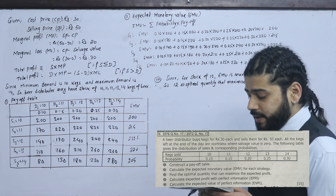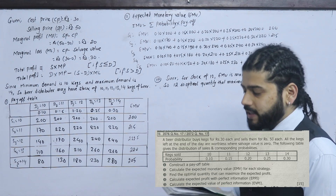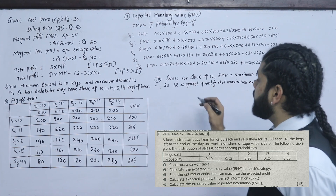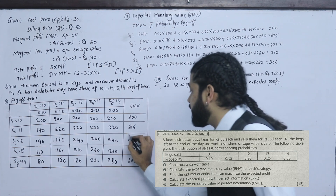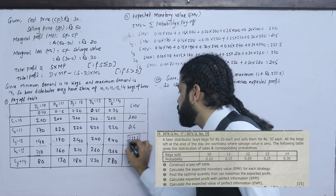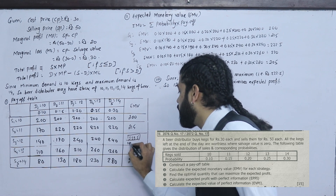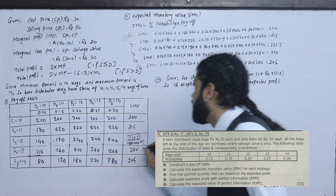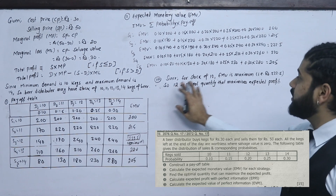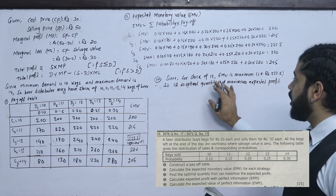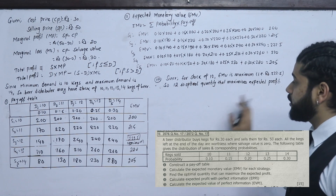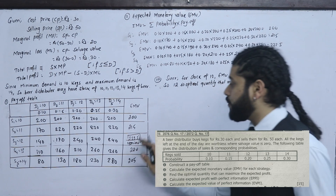Now find the optimum quantity that maximizes the expected profit. The maximum EMV is 222.5. Since stock of 11 cases (S2) gives EMV of 222.5, which is maximum, the stock of 11 cases is the optimum quantity that maximizes the expected profit.